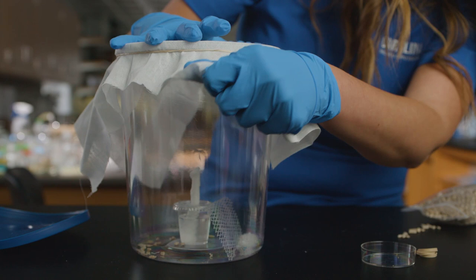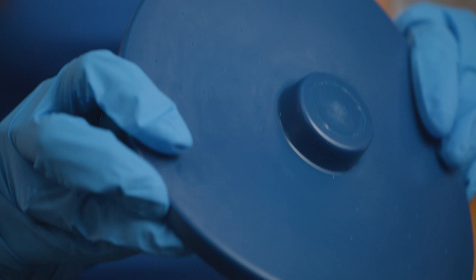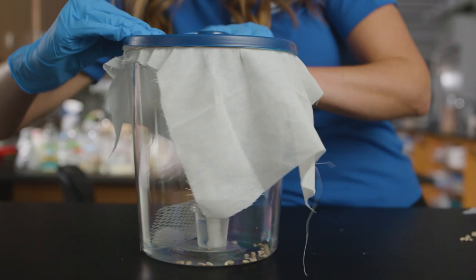Check for folds in the cloth where nymphs could escape. Use a lid with tiny perforations or loosely place the lid on the culture jar to be certain that air exchange can occur.